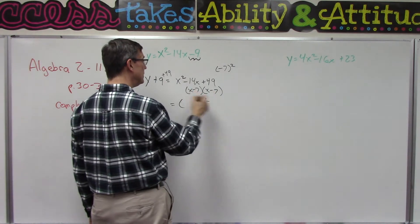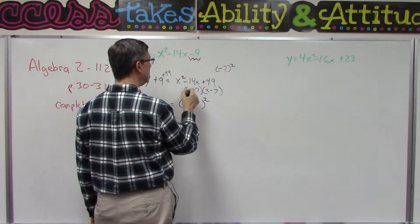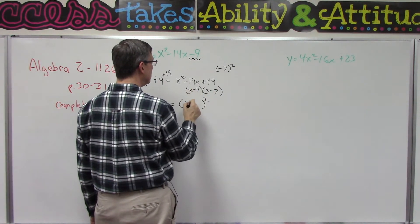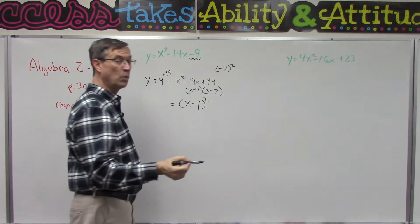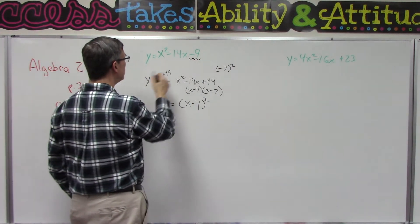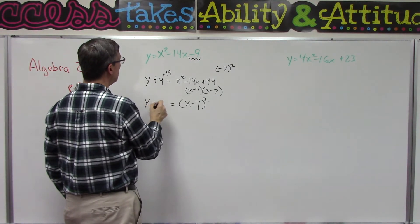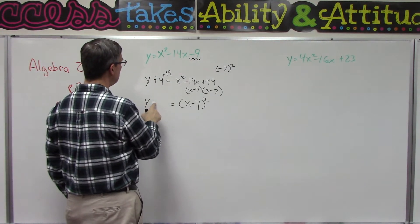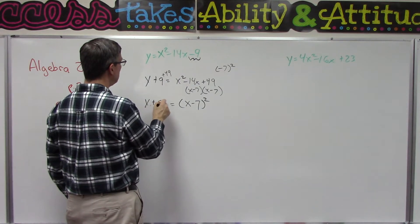This step here, we're kind of doing this in our head. This gives us the x minus 7 quantity squared. Now we need to finish doing this, and so this is going to give us 50x plus 58.